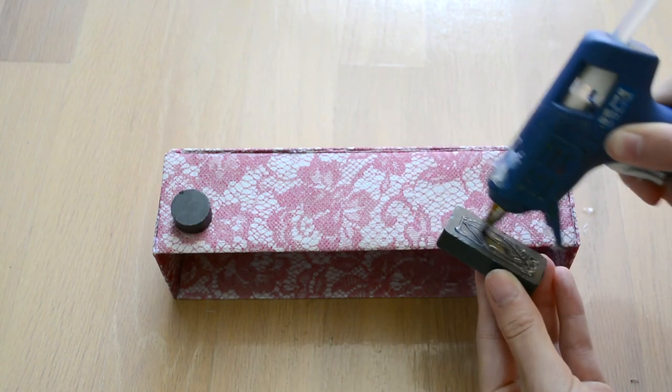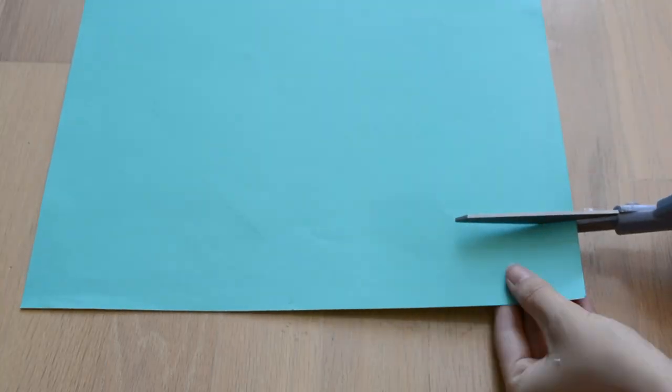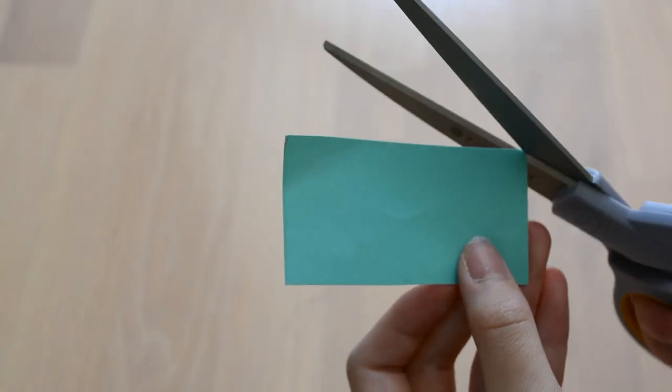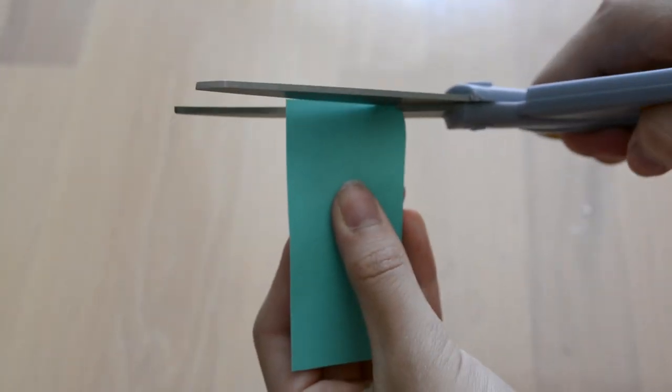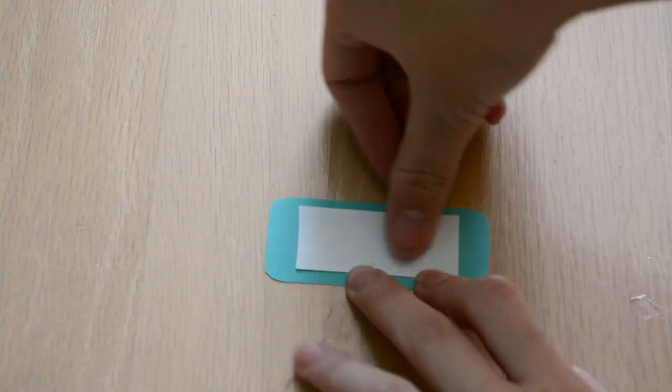And then you can just glue some magnets on the back of your bin. Now this is optional, but I decided to make some decorative label type things. So I cut out some teal paper and I just wrote my name on it and stuck it on with some hot glue.